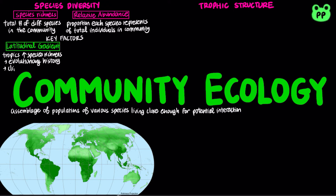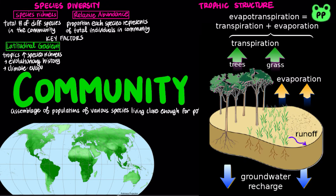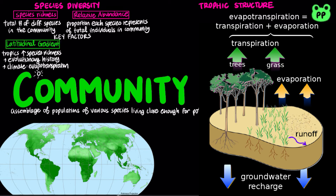Climate is likely the primary cause of the latitudinal gradient in biodiversity. Species richness generally correlates with a community's rate of evapotranspiration, which is a function of solar radiation, temperature, and water availability, all of which are abundant in the tropics.